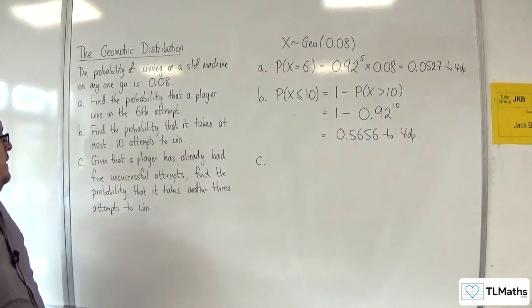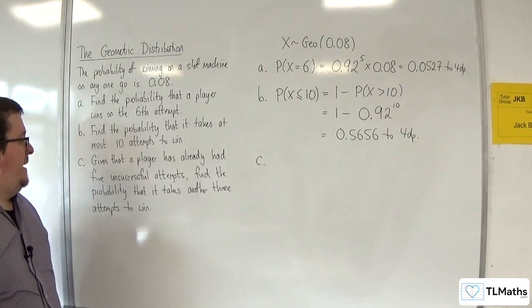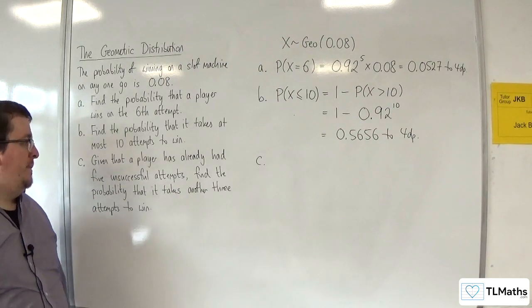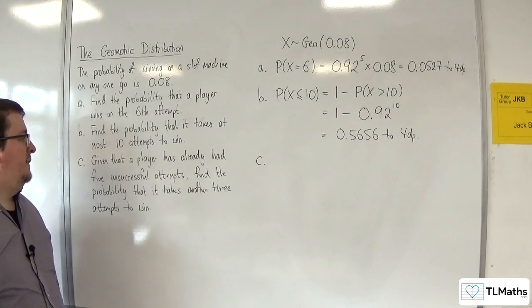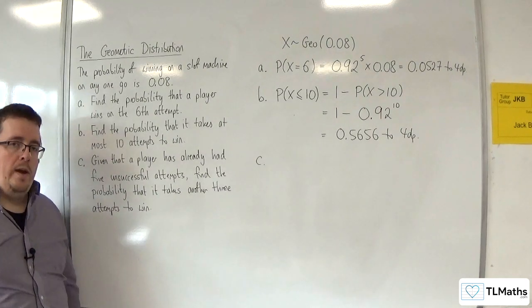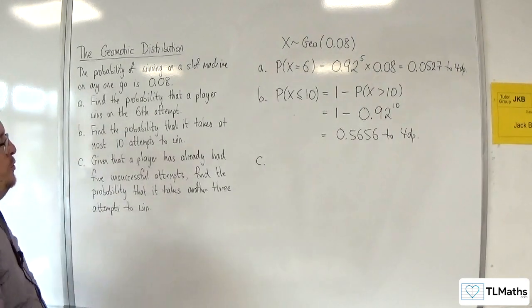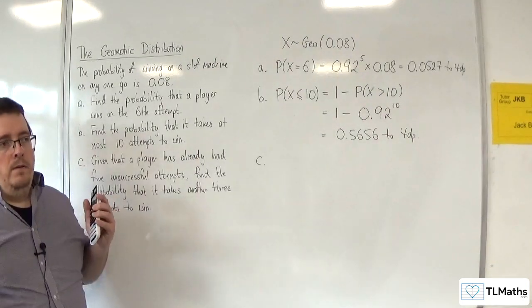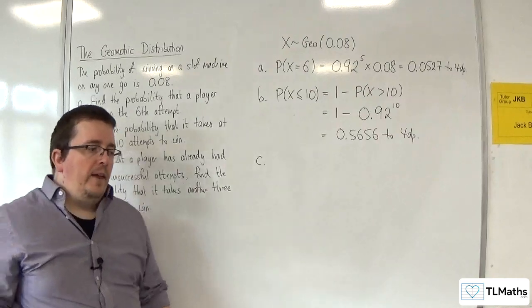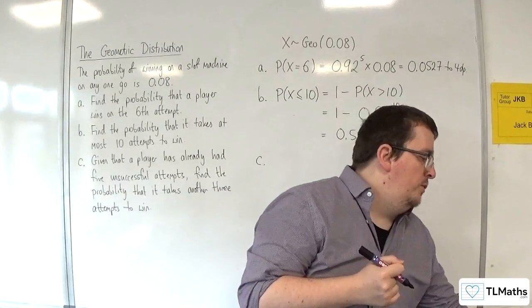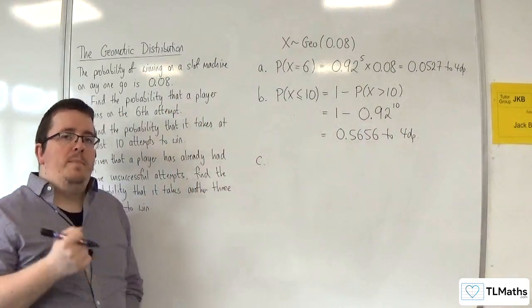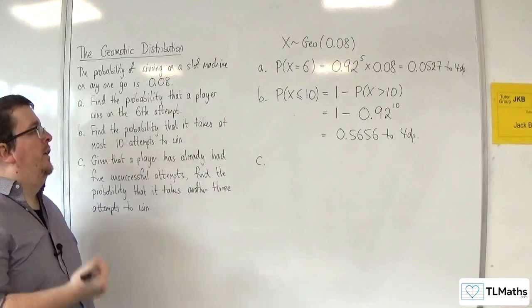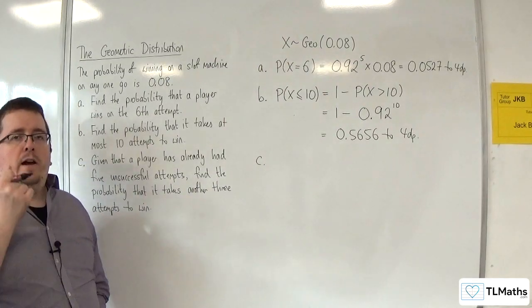So, part C. Given that a player has already had 5 unsuccessful attempts, find the probability that it takes another 3 attempts to win. Now, you could go down a conditional probability route here, but what this question is really asking is it's trying to make sure that you understand what a geometric distribution is, or the properties of the geometric distribution.